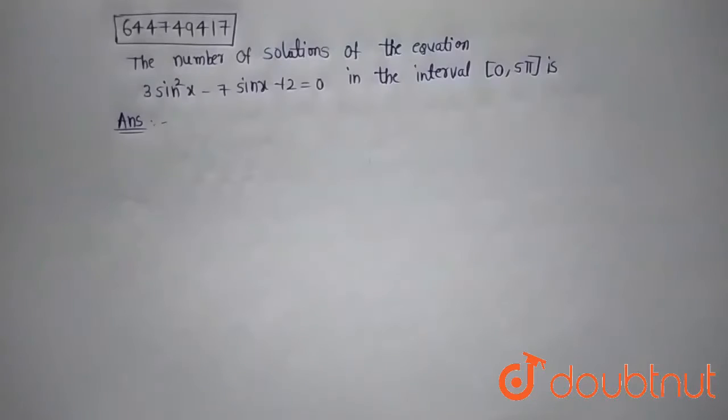Hello everyone, today's question is: the number of solutions of the equation 3sin²x - 7sin x + 2 = 0 in the interval [0, 5π] is?